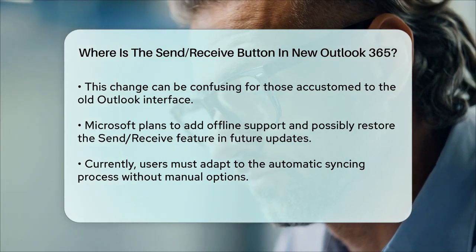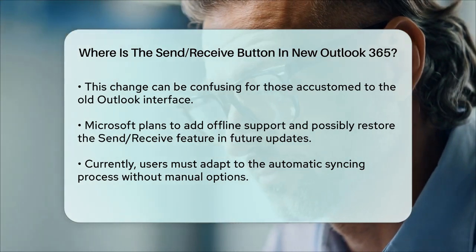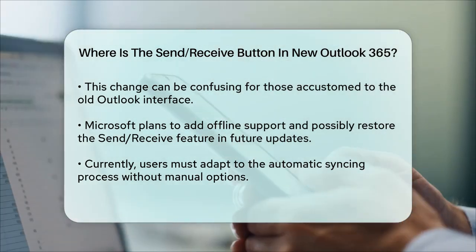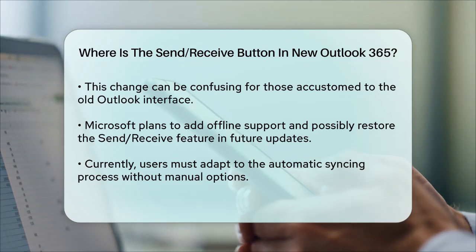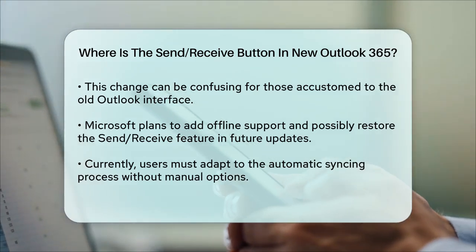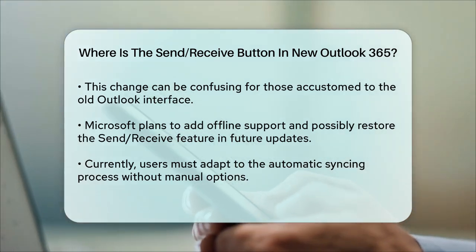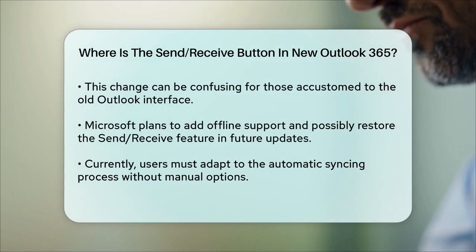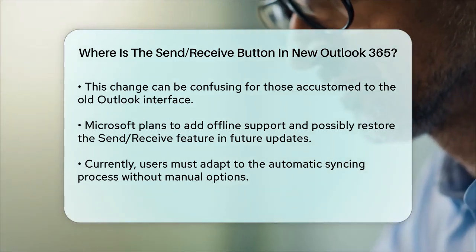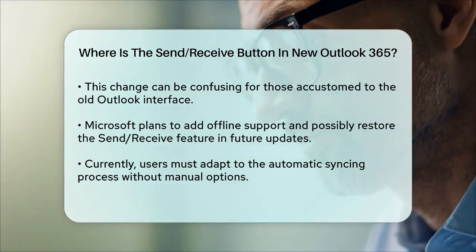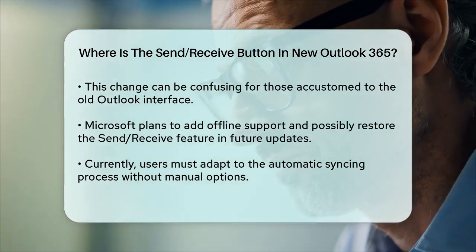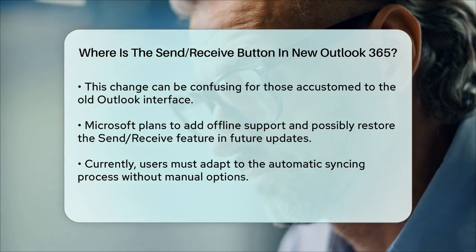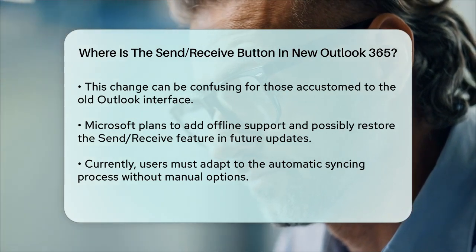In summary, the Send and Receive button is no longer available in the New Outlook 365 desktop version due to the lack of offline support. Your emails will automatically sync as long as you have an internet connection, and you can look forward to future updates that may bring back this feature.